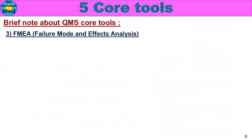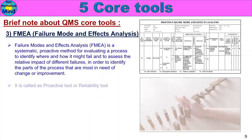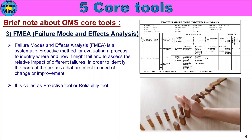Next, FMEA — Failure Mode and Effects Analysis. FMEA is a systematic, proactive method for evaluating a process to identify where and how it might fail and to assess the relative impact of different failures, in order to identify the parts of the process most in need of change or improvement. It is called a proactive tool or reliability tool.